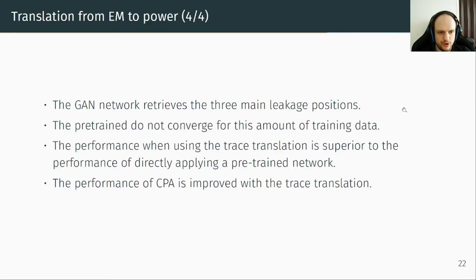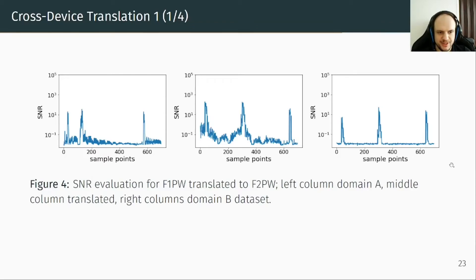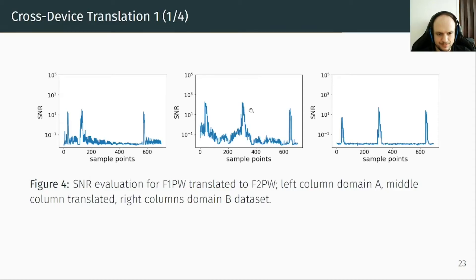This is the summary of the translation from EM to power. Secondly, we investigated cross-device translation. This graph shows the SNR evaluation for F1 power translated to F2 power. On the left is the SNR from F1 power; in the middle, from translated traces; on the right, from F2 power. We observe that the leakage positions from F1 power and F2 power are different, and F2 power has higher SNR than F1 power. In this context, the GAN translates from a smaller to a larger SNR, and it successfully retrieved the three main leakage positions of F2 power.